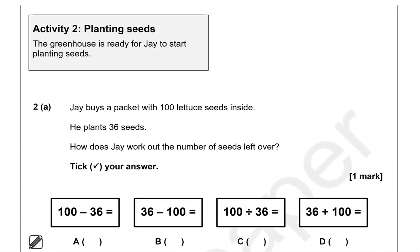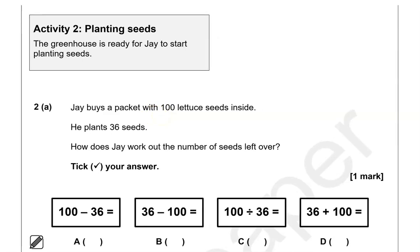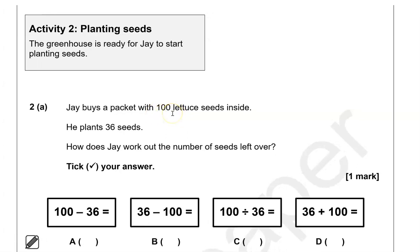The greenhouse is ready for Jay to start planting seeds. Jay buys a packet with 100 lettuce seeds inside and he plants 36 seeds. How does Jay work out the number of seeds left over? To work out how many are left, we go 100 take away 36. That is option A; options B, C, and D are not correct.